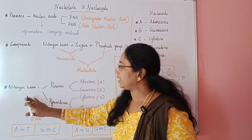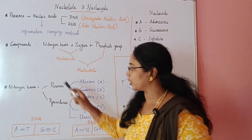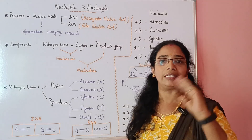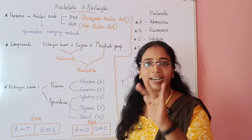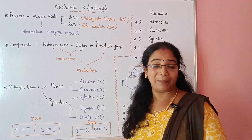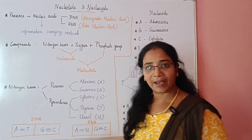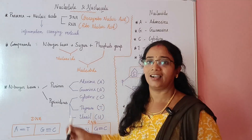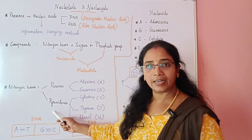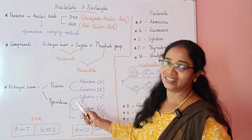Now, for nitrogen bases, there are two types: purines and pyrimidines. Purines include adenine and guanine. Pyrimidines include cytosine, thymine, and uracil.